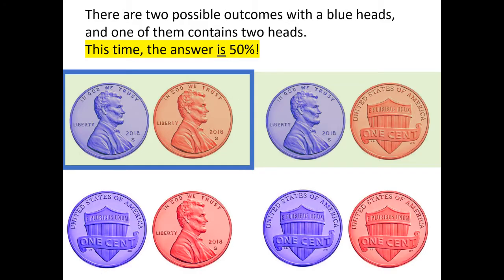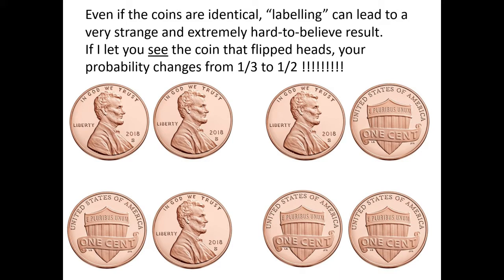This presents a very interesting result. You might ask: how did just changing the names of the coins — making one blue and one red — change the answer? Well, it's even more nuanced than that. If you do the original coin flip with identical pennies and I simply let you see the coin that flipped heads, your probability of landing two heads still changes from one third to one half. Just letting you see the coin that flipped heads changes the probability from one third to one half. Simply seeing a coin is similar to labeling the coin.